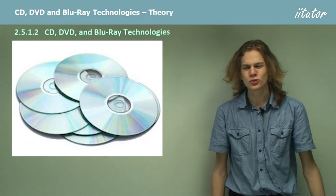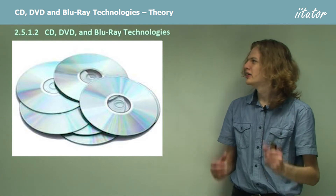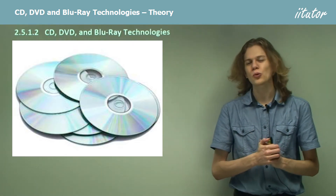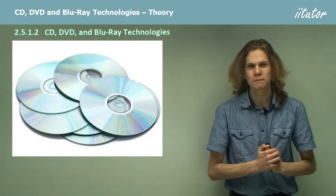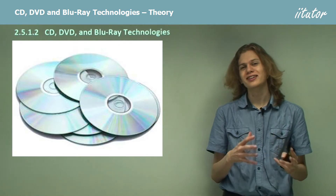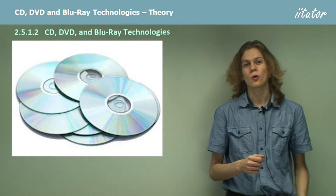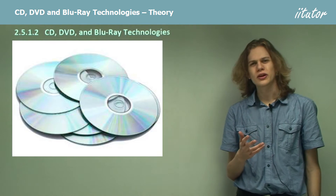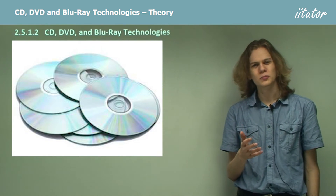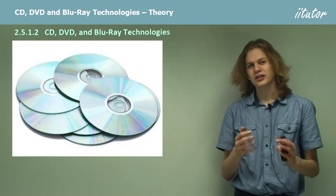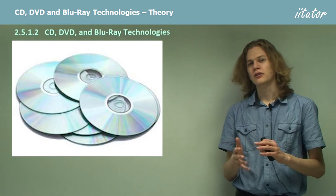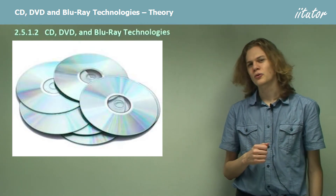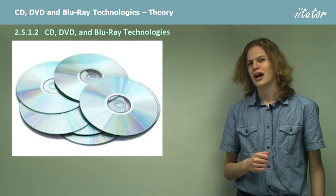Hello everyone. Today we're going to be talking about CD, DVD and Blu-ray technology. These are three ways of storing digital data on disks like we can see here. We know of course there's a bit of a difference between each sort of disk, and in particular the amount of data that we can store in each sort of disk. So let's go into exactly how they work.